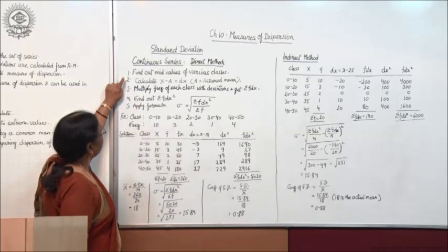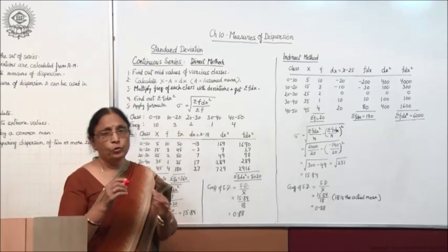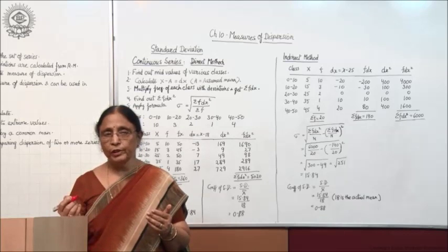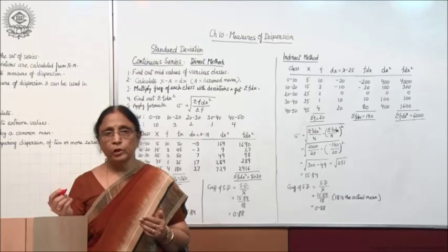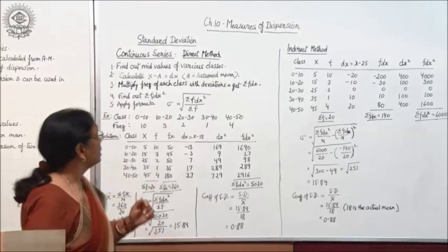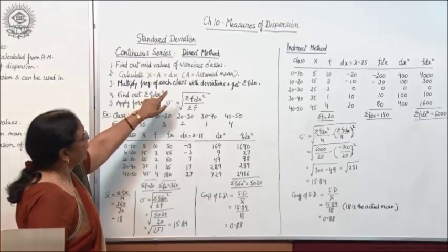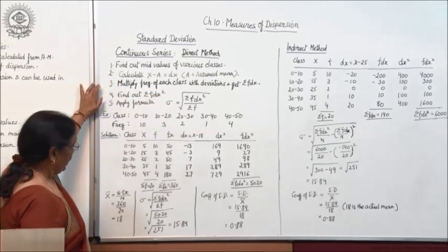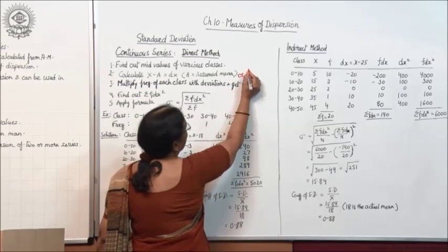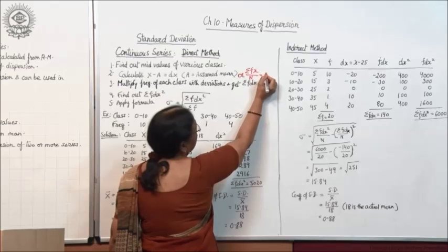In the direct method, the first step is to find out the mid values of various classes. The class interval is given and you have to calculate the mid value using (L1 + L2) / 2. Then the second step is to calculate x minus A, that is dx, where A is the assumed mean. In this case, you will take out Σfx upon n, which is the actual mean.